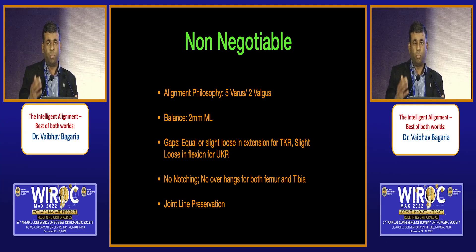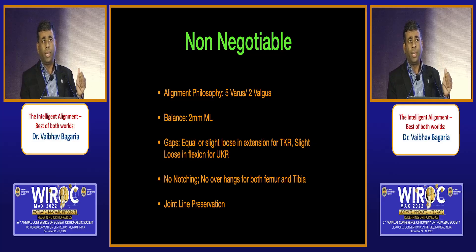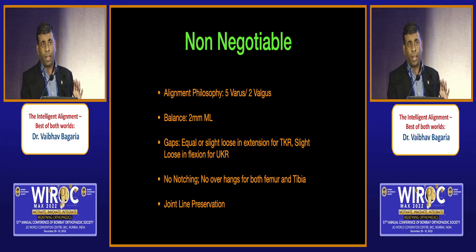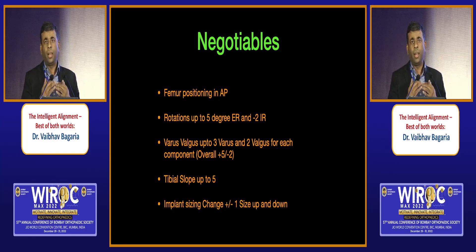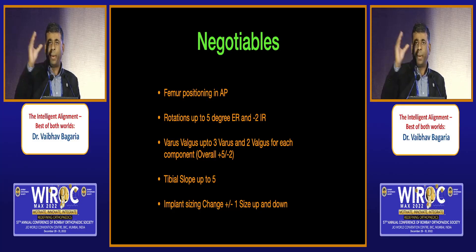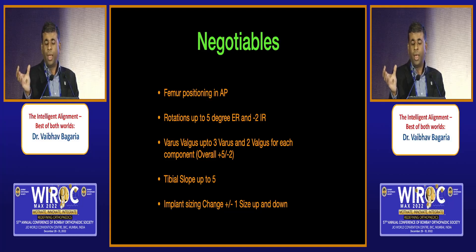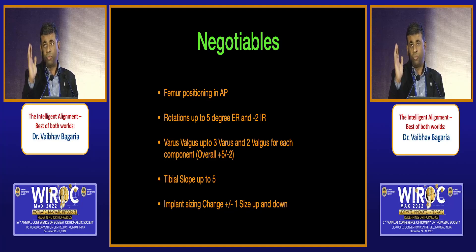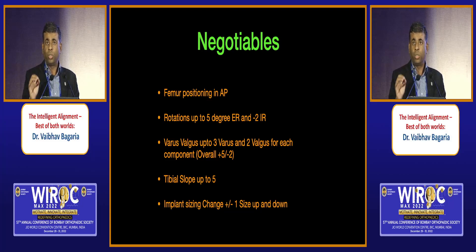I leave UKRs a little loose in flexion — different for different races and patients. I don't want any notching, I don't want femoral or tibial overhangs, and I want to preserve joint lines — these are my non-negotiables. What I negotiate: femoral AP positioning, rotation up to five degrees external versus two degrees internal, varus-valgus in each component up to three degrees but not more than five degrees total. Most are less than three degrees. I can also change tibial slope up to five degrees, and most importantly change my implant size up or down.